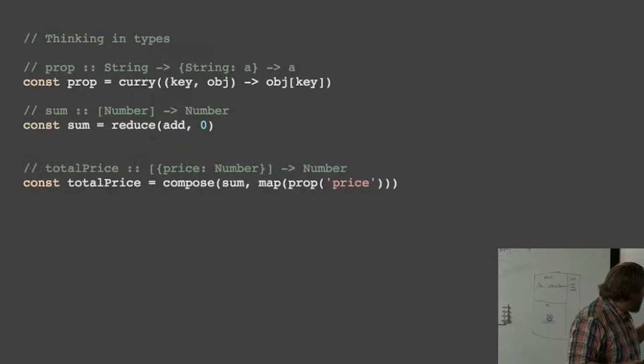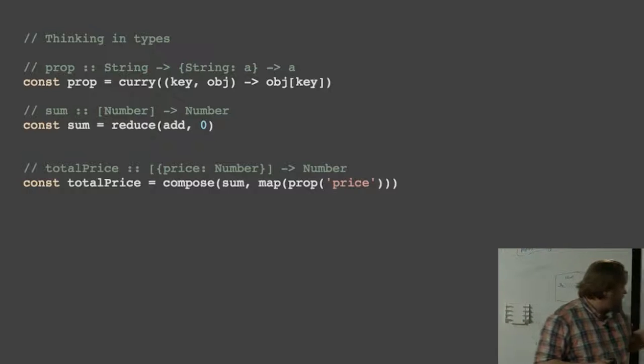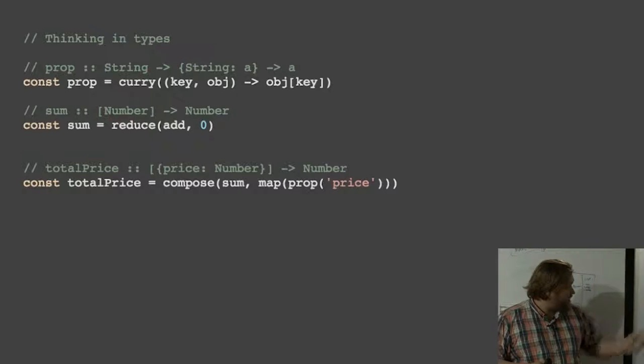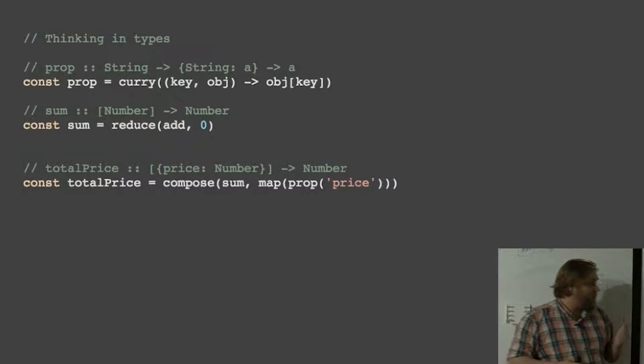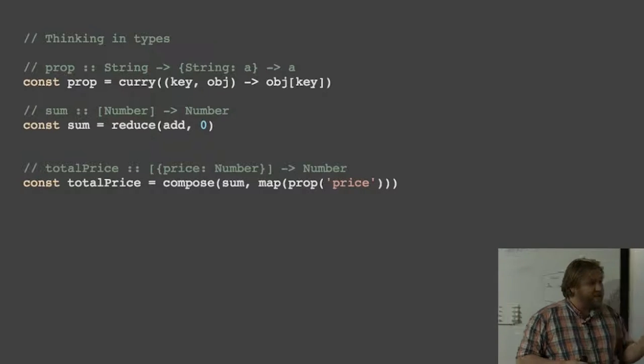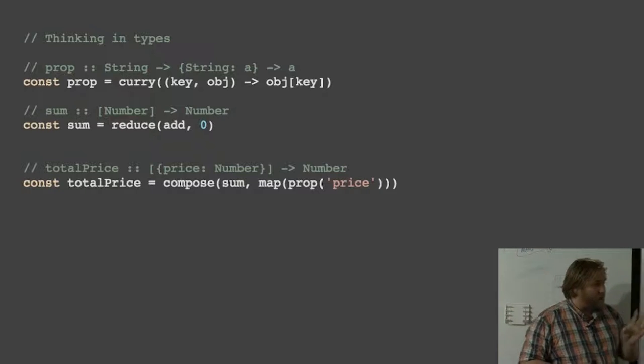So our challenge is not to find the total, it's how do I find a list of numbers? Well, we know where we get the number from. That's the price property on our item. And we know how to get the price property. We partially apply property. And then we use map to basically translate that function from one that takes a single object into one that works on lists. So when we partially apply map, we're translating a single function on a single element into a list function that operates on lists.